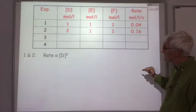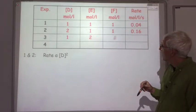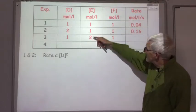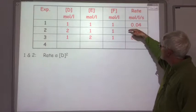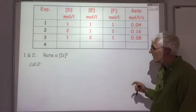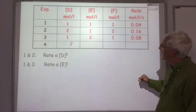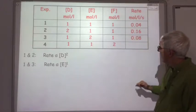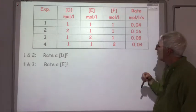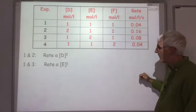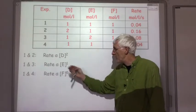Experiments 1 and 2 tell us that the rate is proportional to D squared. In the third experiment, we double the concentration of E, and that doubles the reaction rate from experiment 1. So the rate is directly proportional to E. Experiments 1 and 3 tell us the rate is directly proportional to E. In the fourth experiment, we double the concentration of F, and that has absolutely no effect on the rate of reaction. So experiment 1 and 4 tells us that the rate is proportional to F to the power 0, and F to the power 0 is 1, so the rate does not depend on F.